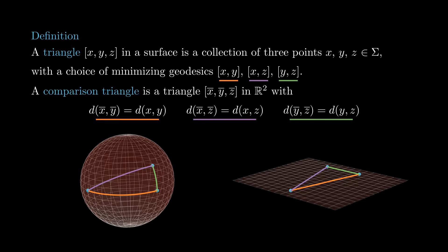That is, x-bar y-bar equals xy, x-bar z-bar equals xz, and y-bar z-bar equals yz. The comparison triangle is also called a model triangle. Obviously, the comparison triangle is not unique. But if we take two model triangles, they are congruent by the side-side-side criterion. Therefore, the geometric properties of the model triangle are unique — for example, the angles.